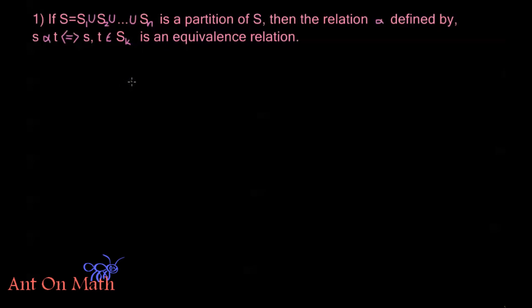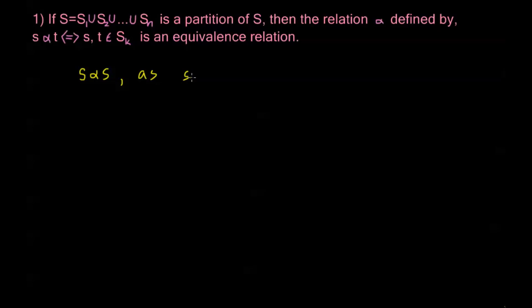This is an example of how we can test if something is an equivalence relation. Remember we have to test our three properties: reflexive, symmetric, and transitive. First, we know that clearly s alpha s, because s and s are both elements of the same set S_k. This is clearly going to be a reflexive relation because any element s is in the same set as itself, and that's how we're defining the relation — two elements are related if they're in the same set of the partition.